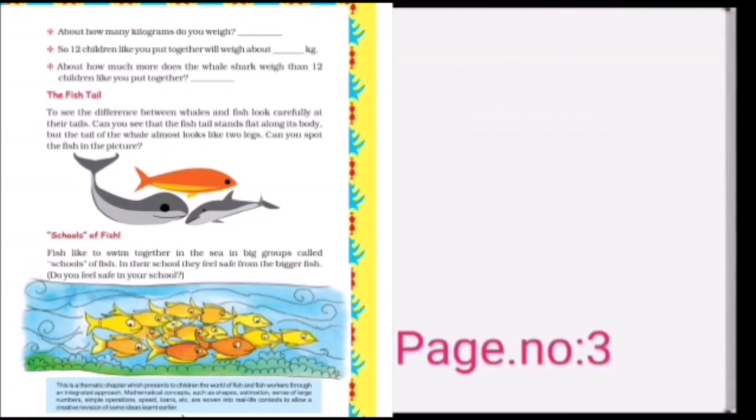See this page. Here are some questions. About how many kilograms do you weigh? Let's suppose 40 kg. The next question is: So 12 children like you put together will weigh about—multiply 40 into 12. This will be 480 kg. See the next question: About how much more does the whale shark weigh than 12 children like you put together? The weight of the whale shark was 16,000 kg, so we need to divide it by 480 to get this answer.